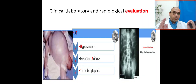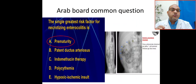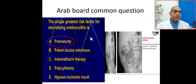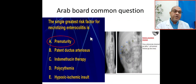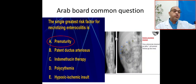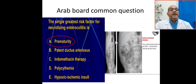In summary, the single greatest risk factor for necrotizing enterocolitis is prematurity. The three main risk factors are: prematurity, premature formula feeds, and ischemic gut from perinatal asphyxia, PDA, and polycythemia. The three classic X-ray findings are: pneumatosis intestinalis, portal gas, and pneumoperitoneum or free air.